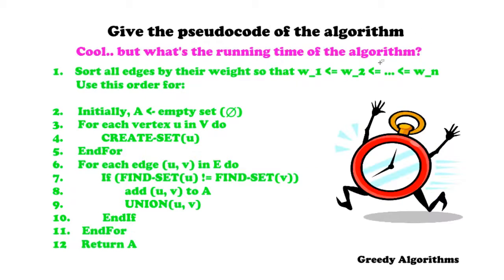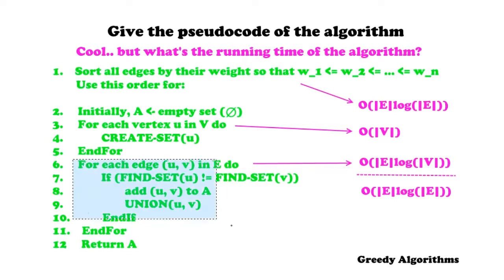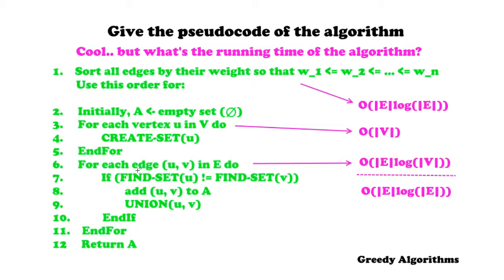An important question is: what's the running time of the algorithm? Sorting takes O(E log E). The first for-loop takes at most O(V) since we do this for every vertex. The second for-loop takes O(E log V) — we process every edge until all vertices are connected, multiplied by the logarithm of the number of vertices. The dominant term is O(E log E), so the overall running time of Kruskal's algorithm is O(E log E).